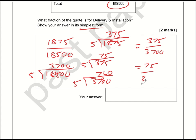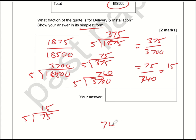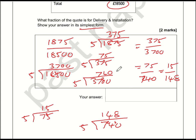We can still divide by 5 again. 75 divided by 5 is 15, and 740 divided by 5: 7 divided by 5 is 1 remainder 2, 24 divided by 5 is 4 remainder 4, 40 divided by 5 is 8 — giving 148. So it becomes 15 over 148. Can that be simplified any further? It cannot. So the final answer is 15 over 148.